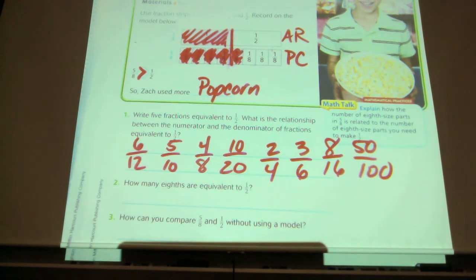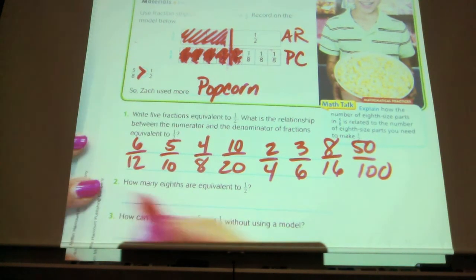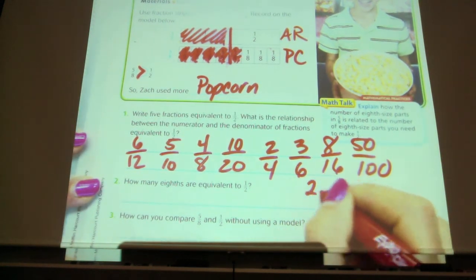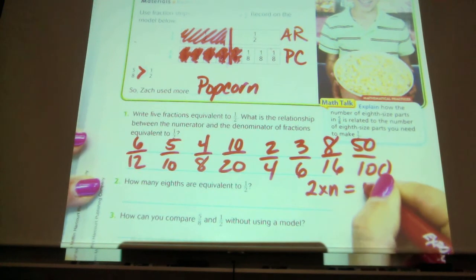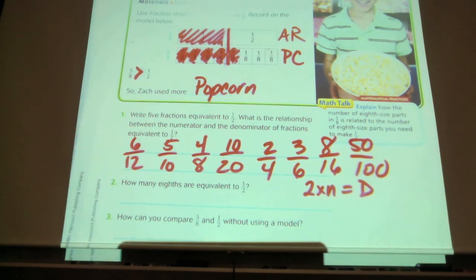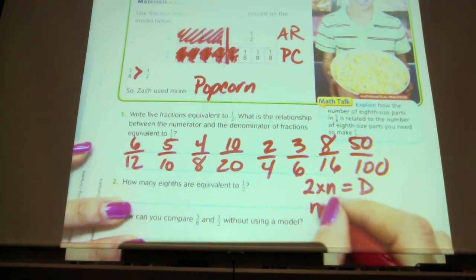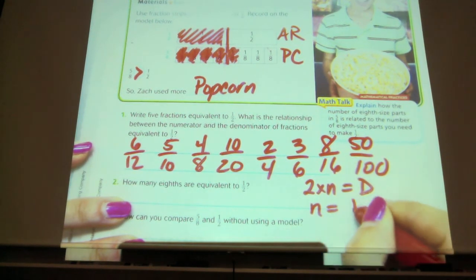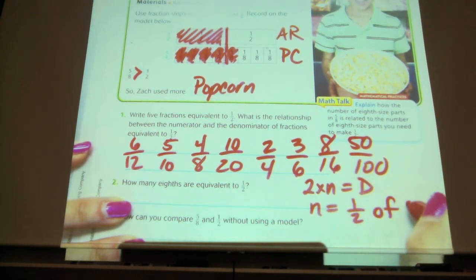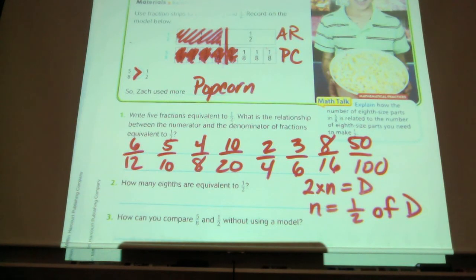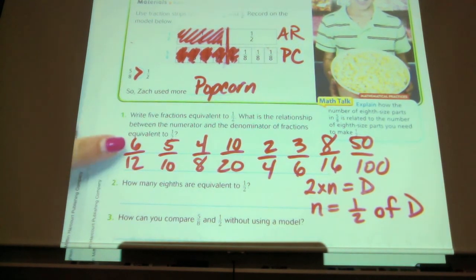What is the relationship between the numerator and the denominator in each fraction? Okay, so we can call it two times the numerator equals the denominator. What's another way to word that, Owen? The numerator equals one-half of the denominator, right? So if I look at the denominator, and I take half of it, I get the numerator.